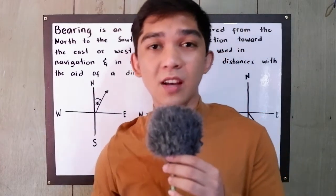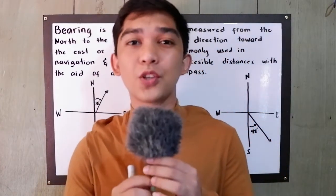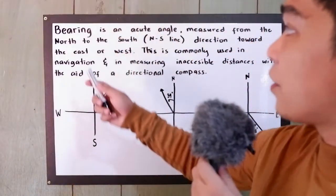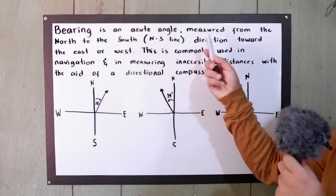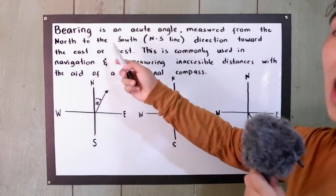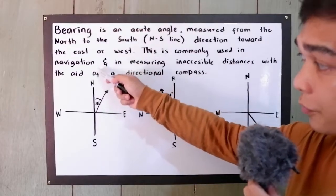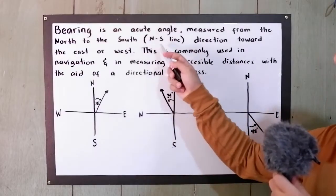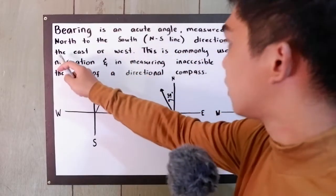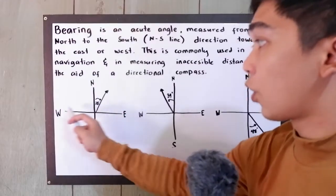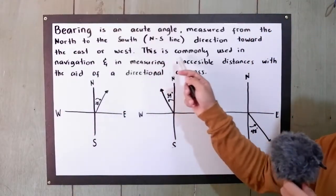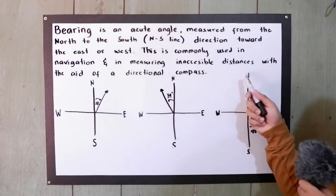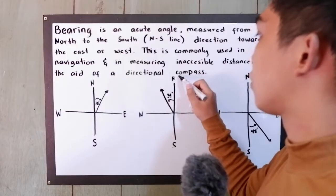Good day everyone. Today I will be discussing another important application of right triangles, which is the bearing. By definition, a bearing is an acute angle measured from the north-to-south vertical line, directed toward the east or west. This is commonly used in navigation and in measuring inaccessible distances with the aid of a directional compass.